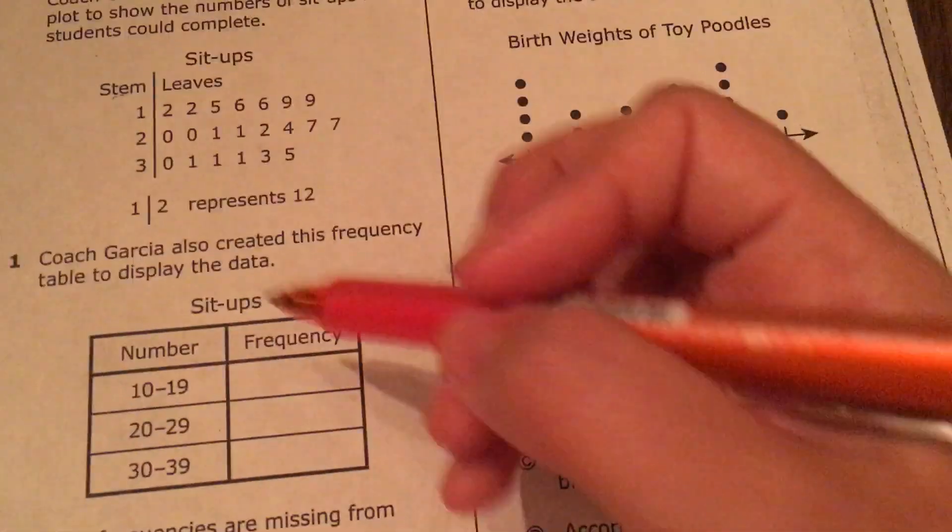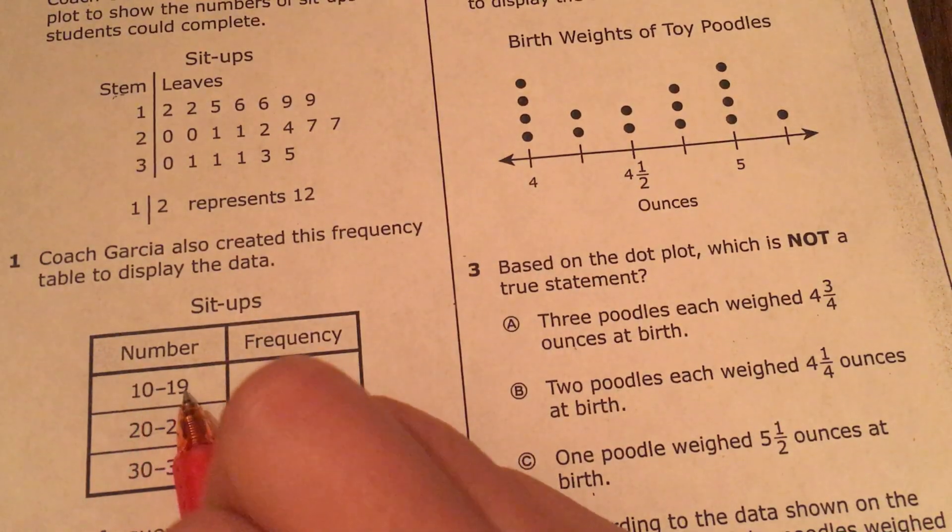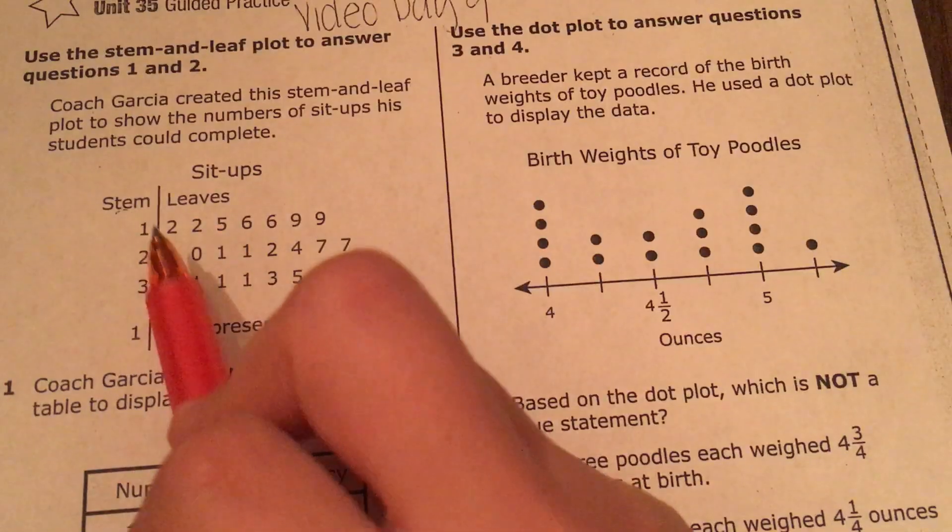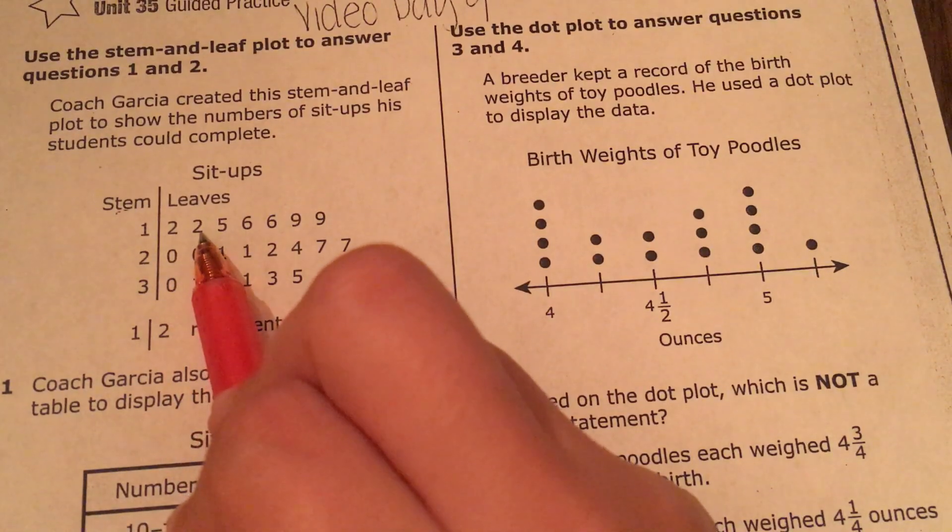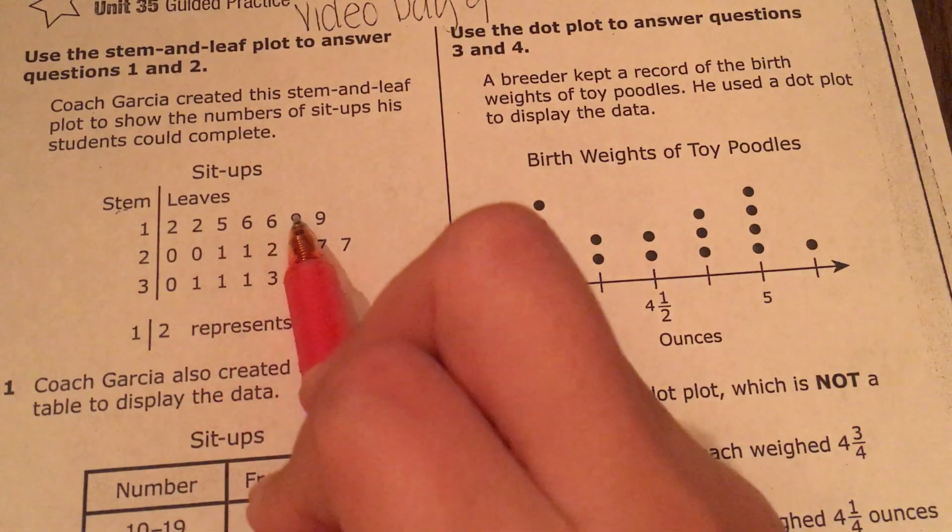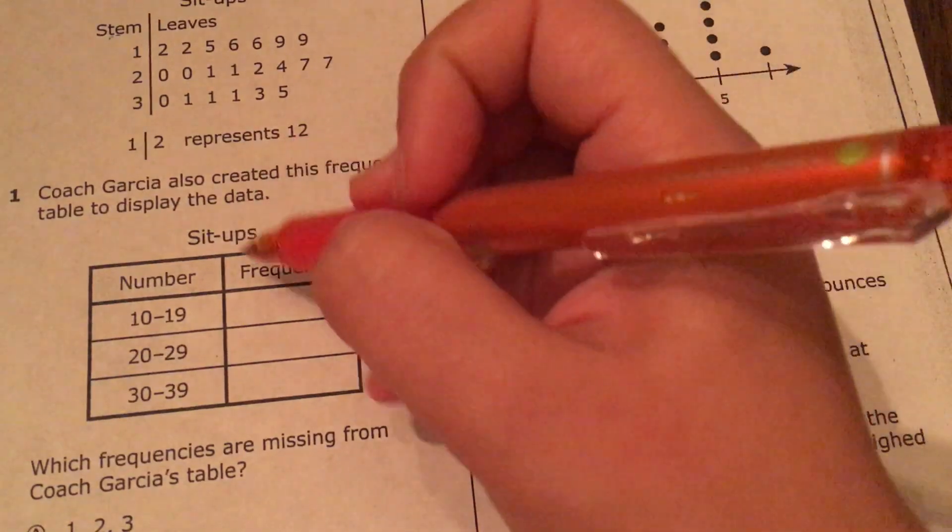Alright, so I want to know how many numbers are between 10 and 19. Okay? So here I have 1, 2, 3, 4, 5, 6, 7. I have 7 numbers here.